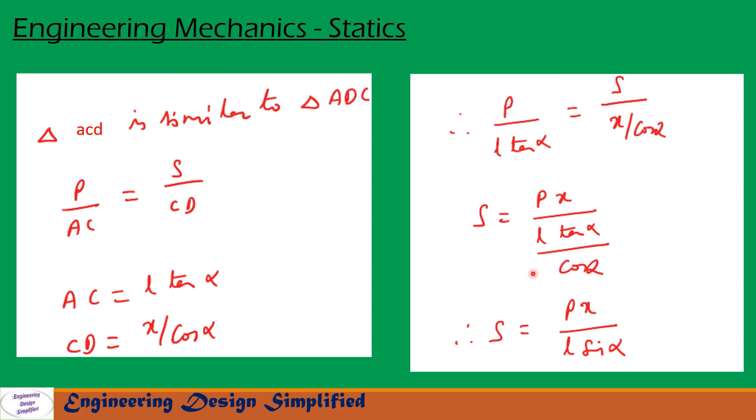After rearranging and simplification we get S equal to PX by L sin alpha. S, that is tension in the tie rod, equals P the applied load times X by L sin alpha. So this is the relationship.